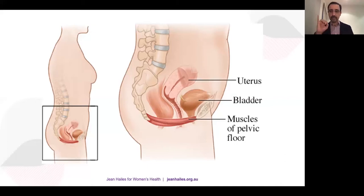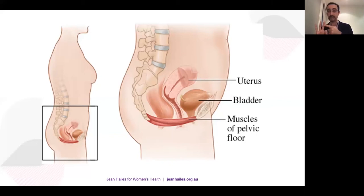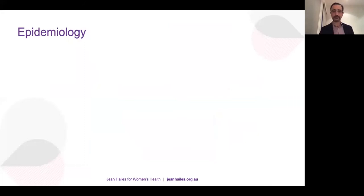The pelvic floor has three functions: it contains the pelvic organs, provides continence, and is involved in sexual function. Therefore, the dysfunctions are issues with containment — prolapse; issues with incontinence, such as urinary incontinence or anal/faecal incontinence; and female sexual dysfunction. Those are the three dysfunctions that emerge from these defined functions.